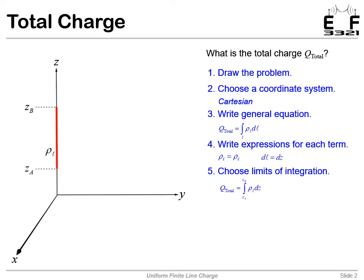Then we choose our limits of integration. While we're integrating along the Z-axis, it makes sense to integrate from ZA to ZB, since those are the start and the end of our line charge.